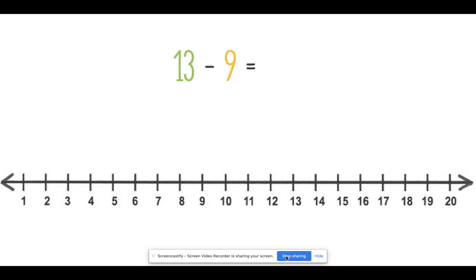Let's try some more. Here we have 13 minus 9. Where am I going to put my froggy? You're right. Froggy is going to go on the number 13. How many spaces back is froggy going to jump? Did you say 9? Good job.